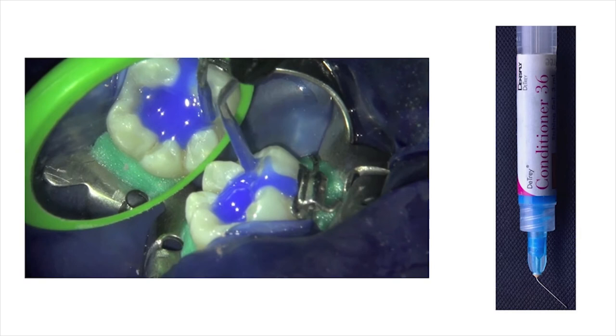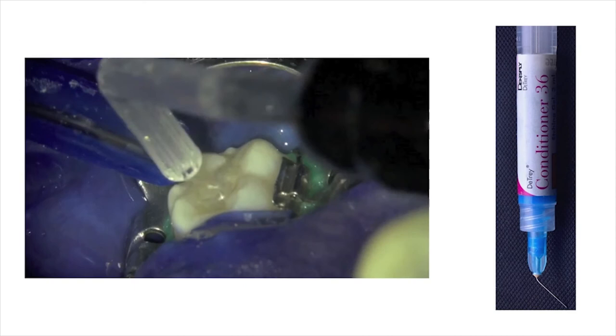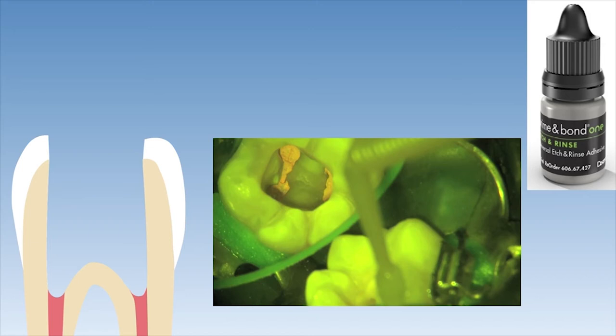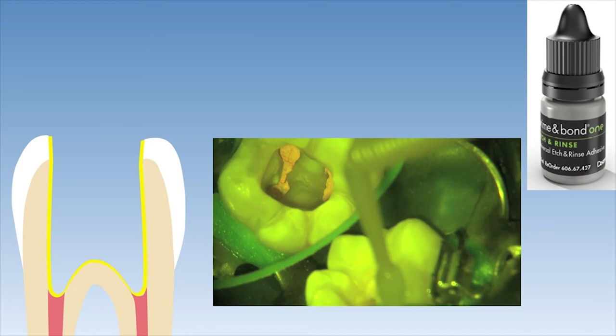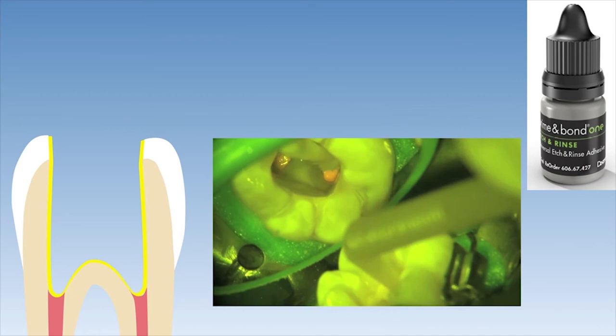The enamel and dentine was etched with phosphoric acid for 15 seconds before the etchant was rinsed off thoroughly with water and lightly air dried with compressed air. A microbrush saturated with Prime and Bond etch-and-rinse was used to infuse the bonding resin into the etched enamel and dentine surfaces for approximately 10 seconds, before it was light cured for 20 seconds after evaporation of the solvent. Here we can see this step being performed clinically — bonding resin application, infusion into the etched enamel and dentine, followed by solvent evaporation and finally the light curing step.